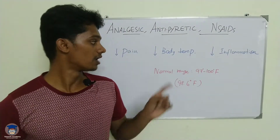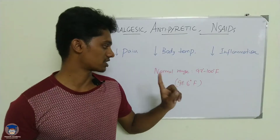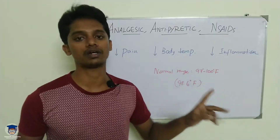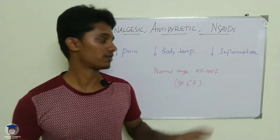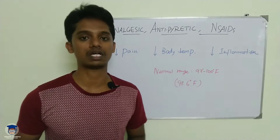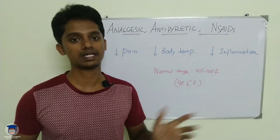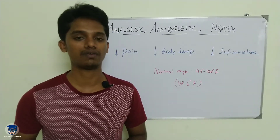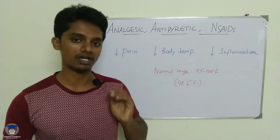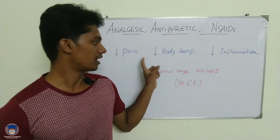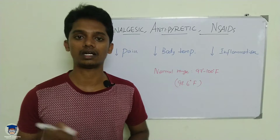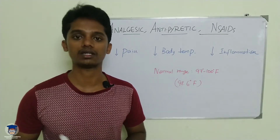The normal body temperature is 98.6 degrees Fahrenheit. The general acceptable range is 97 to 100 degrees Fahrenheit — even 100 degrees Fahrenheit can be acceptable. When body temperature exceeds this range, that is fever — excessive body temperature. NSAIDs will reduce the excessive body temperature but do not affect normal body temperature.